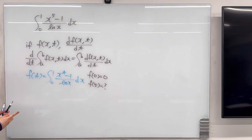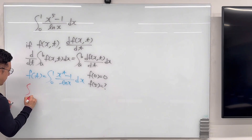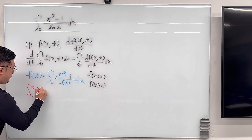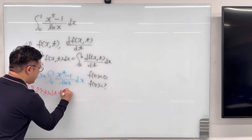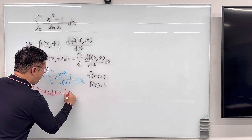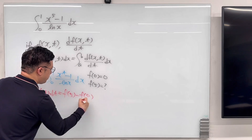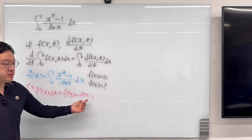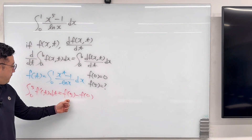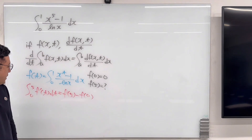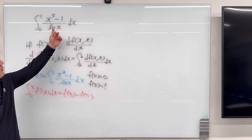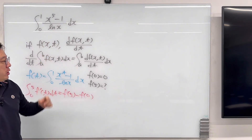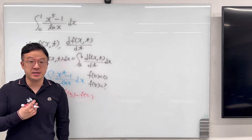So we can talk about the integral from 0 to 5 of f prime of t dt, which is the same as f of 5 minus f of 0. Since f of 0 is equal to 0, f of 5 that we are looking for has to be the same as the integral from 0 to 5 of f prime of t dt. All we need to do is cancel out this ln of x in the denominator by working on the form that is easier to work with.